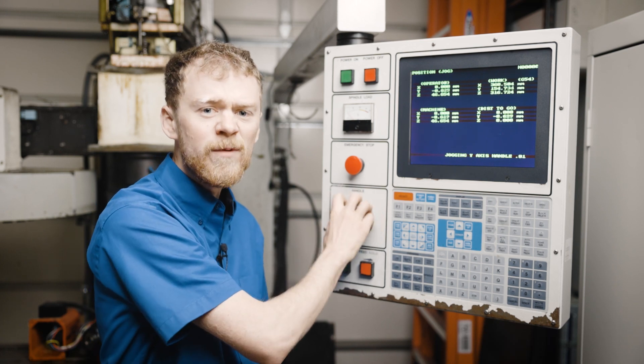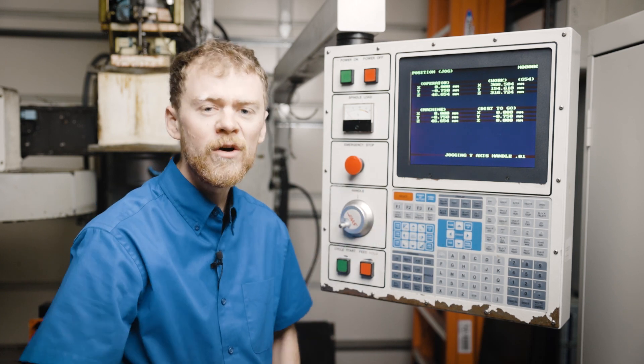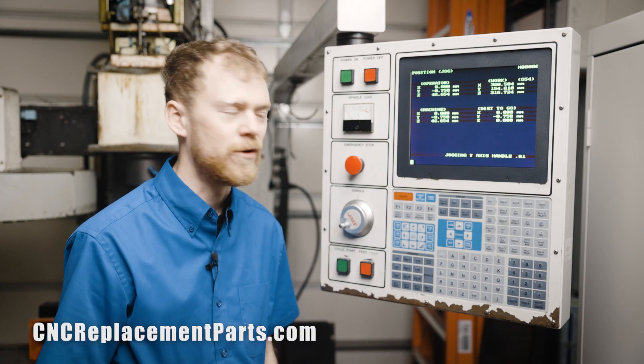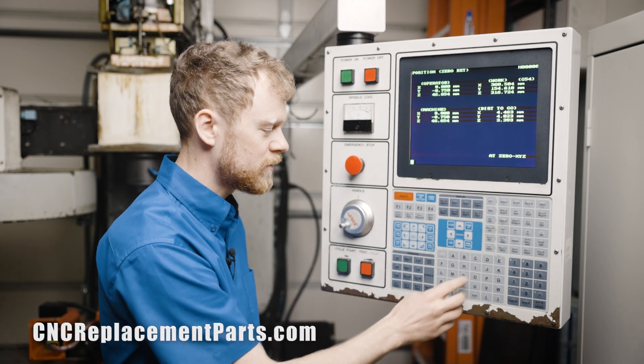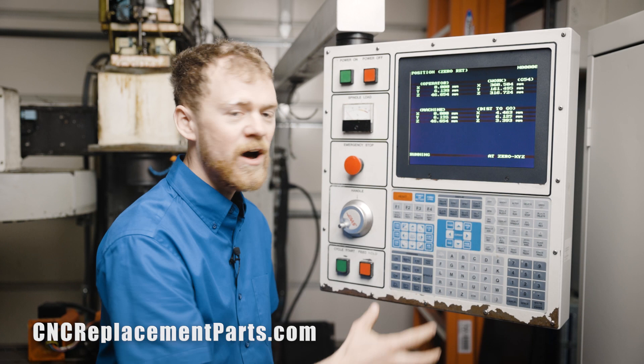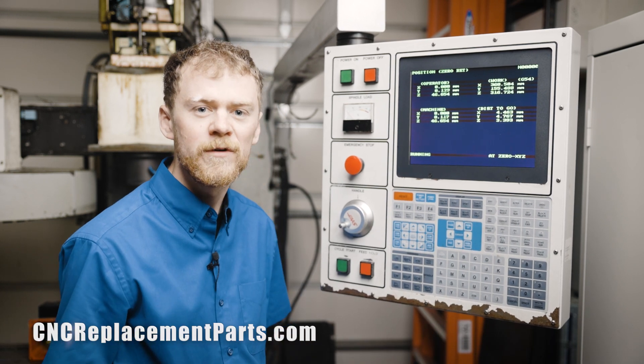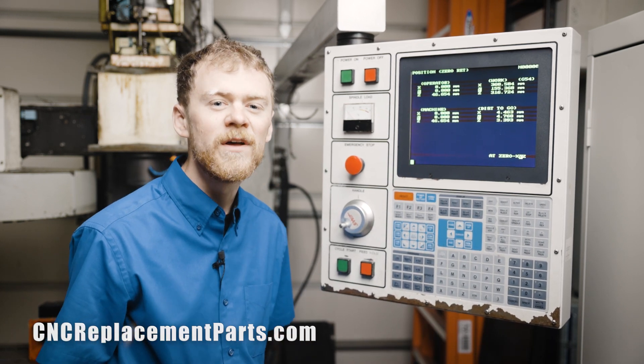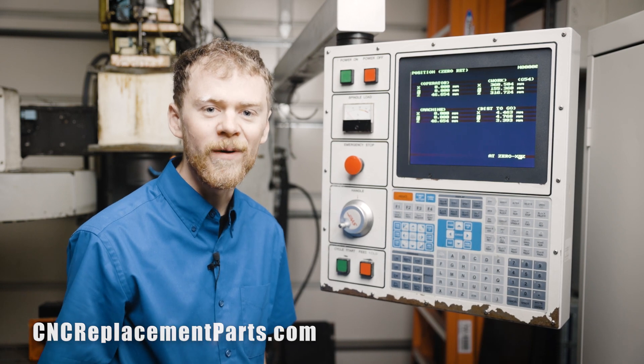Now you can jog it away from your part, get your tool out of it, or go wherever you need to. Say you have a way cover that you need to put on before doing a zero return. Now I've got it away and I can do a zero return. So setting 53 is very useful if your machine is turned off and you need to jog it before homing it.